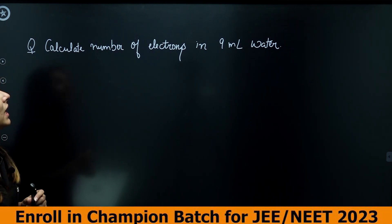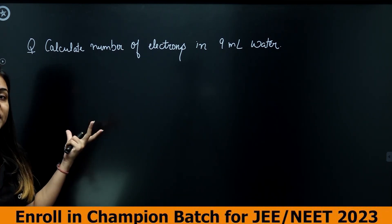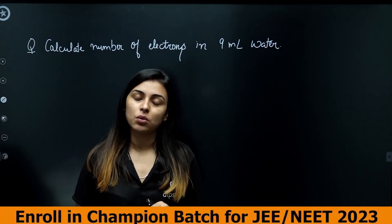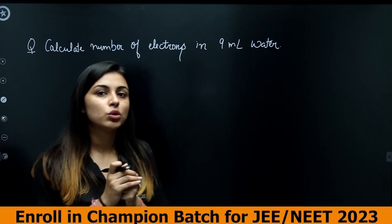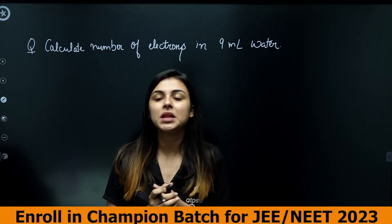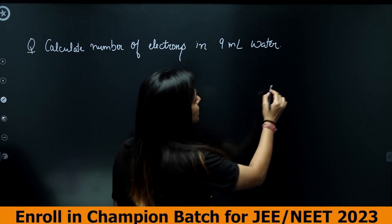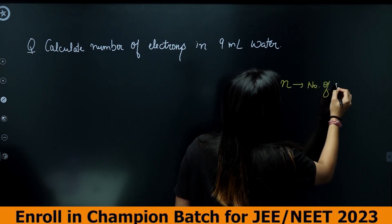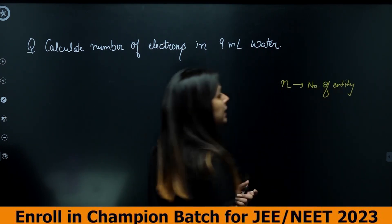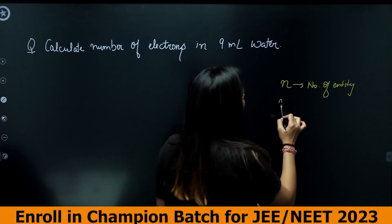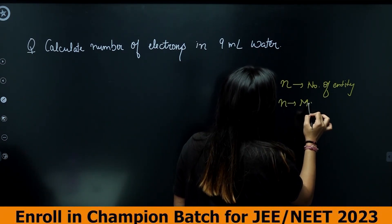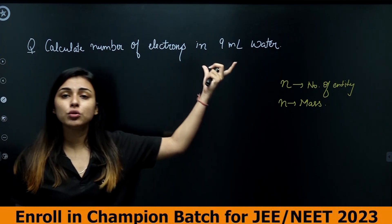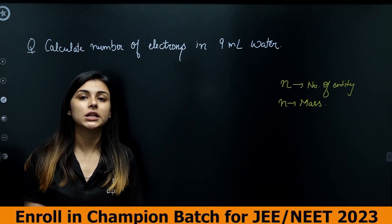New question: Calculate the number of electrons in 9 ml of water. We know how to find moles when number of entities or mass is given — but here, volume of water is given. How do we approach this?